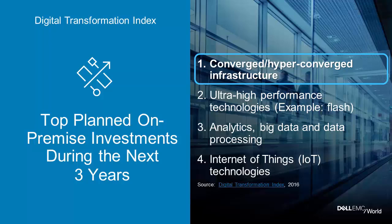Companies are recognizing they need to transform and do things differently. Where are they actually investing? One of Dell's recent studies — the Digital Transformation Index — surveyed several thousand CIOs and IT leaders asking where they planned to invest to make this a reality. The top response was putting money into converged and hyper-converged infrastructure to solve traditional infrastructure challenges. It was very telling that the top investment area was at the infrastructure layer. Everybody's trying to modernize that infrastructure to allow them to operate in the digital economy.